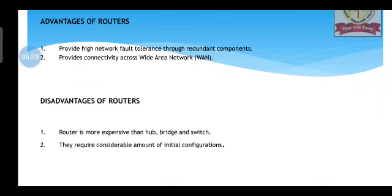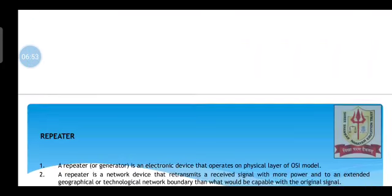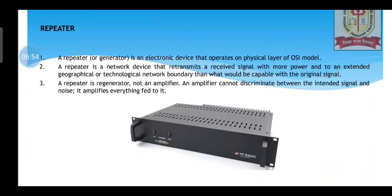Advantages of routers: they provide high network fault tolerance to redundant components and provide WAN network access, that is internet. Disadvantages of routers: a router is more expensive than hub, bridge, and switch, and they require a considerable amount of initial configuration.